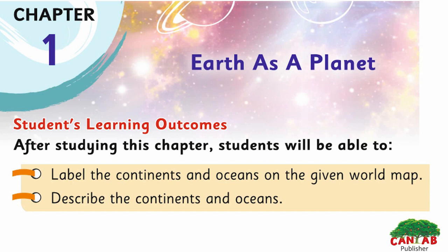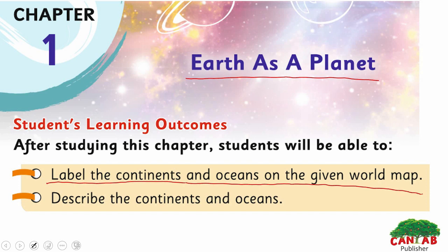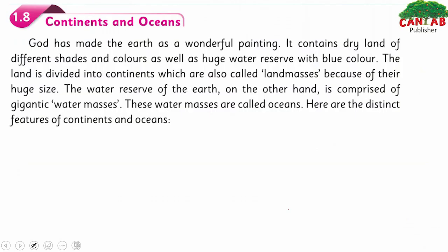Students, today we will discuss the last two SLOs of chapter number one, that is 'Earth as a Planet.' Our today's SLOs are: to label the continents and oceans on the given world map, and to describe the continents and oceans.